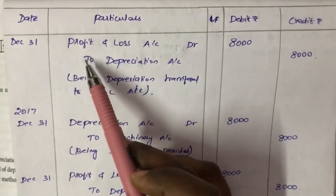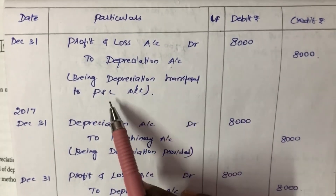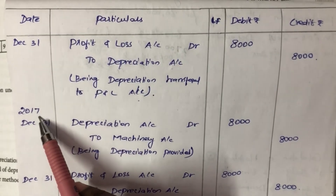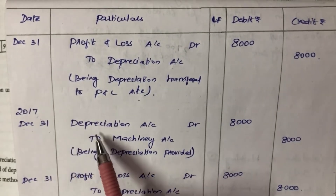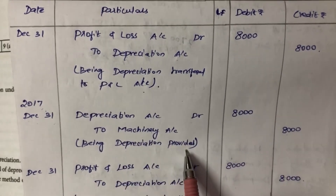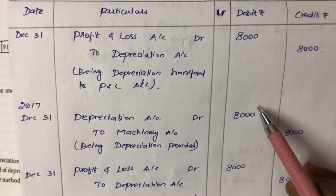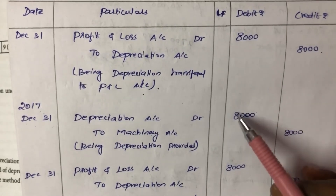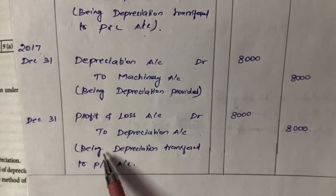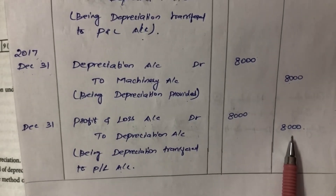The depreciation amount is transferred to profit and loss account on December 31st. Depreciation account is 8,000 rupees, being depreciation provided. Under the Straight Line Method, the same 8,000 rupees is recorded next year as well. On December 31st, depreciation account is transferred to profit and loss account — being depreciation transferred to P&L account — amount is 8,000 rupees.